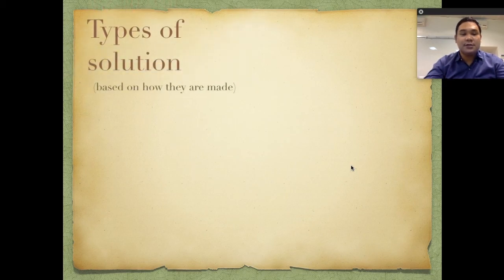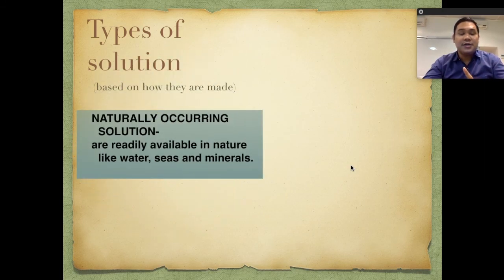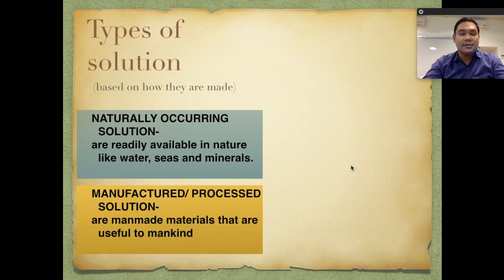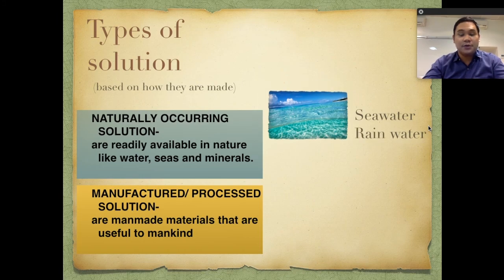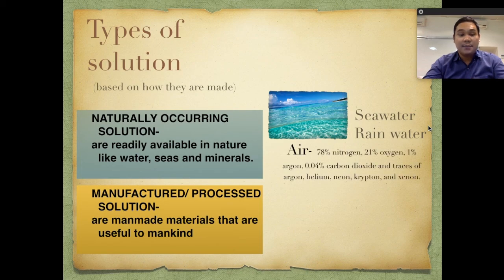We have different types of solution classified based on how they are made. The first type is naturally occurring solution — these are solutions readily available in nature, like seawater and minerals. Examples include seawater and rainwater, which is also composed of water and other substances unnoticeable to the eye. Another example is air, composed of 78% nitrogen, 21% oxygen, 1% argon, 0.04% carbon dioxide, and traces of helium, neon, krypton, and xenon.